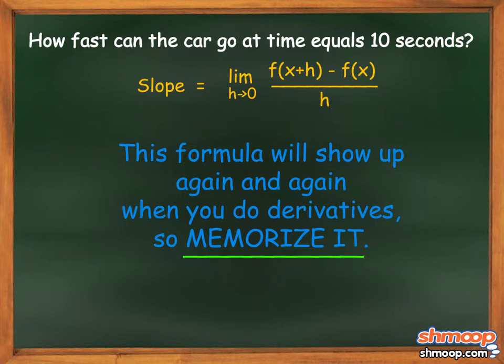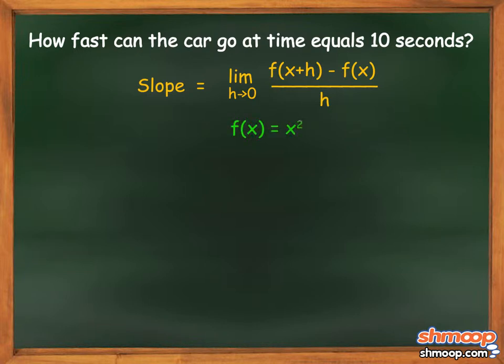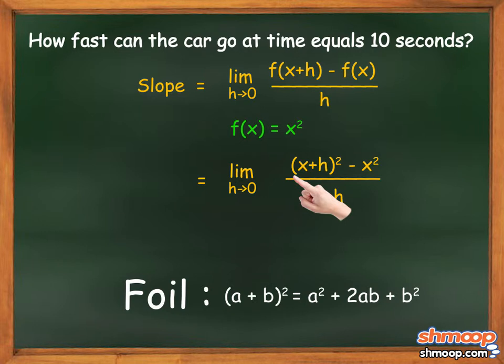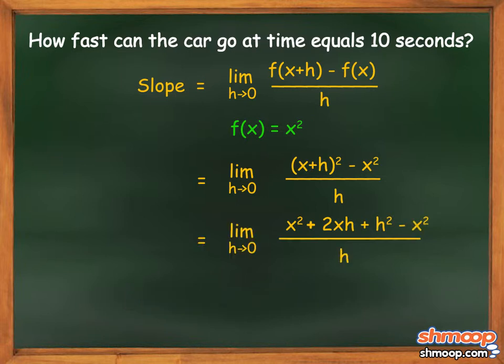Plugging in Mr. Snickerdoodle's equation, we have f(x) = x². For the first part, we plug in (x+h) instead of x to get the limit as h approaches zero of [(x+h)² - x²] over h. If we FOIL (x+h)², we get x² + 2xh + h². We can cancel the x squareds, leaving us with the limit as h approaches zero of (2xh + h²) all over h.